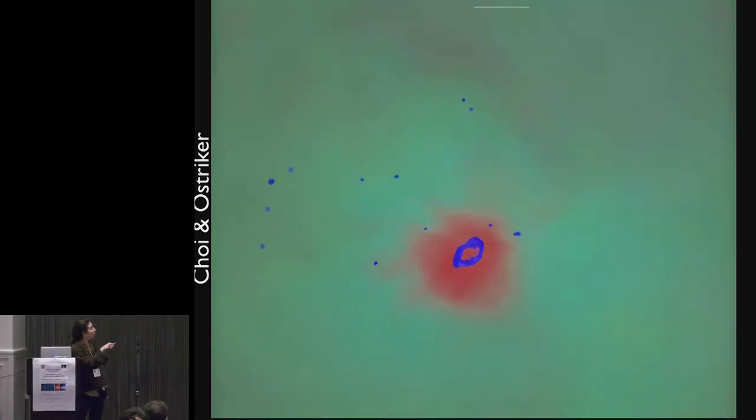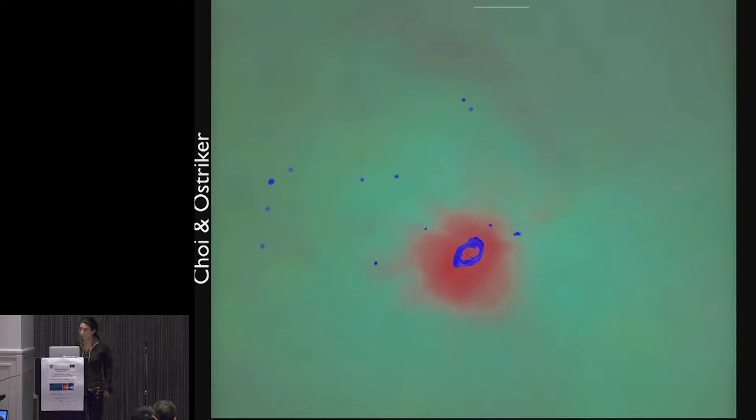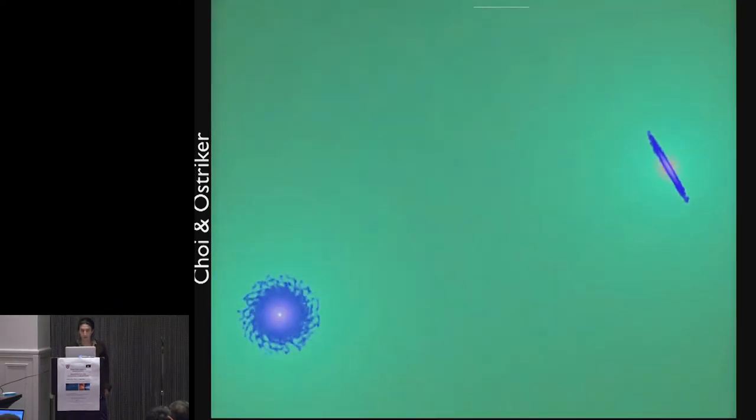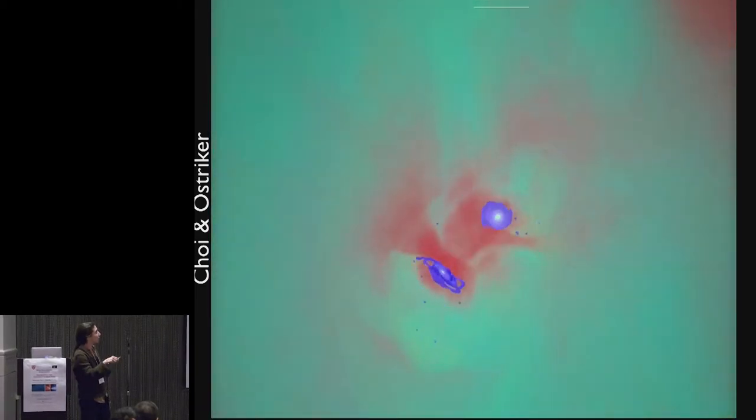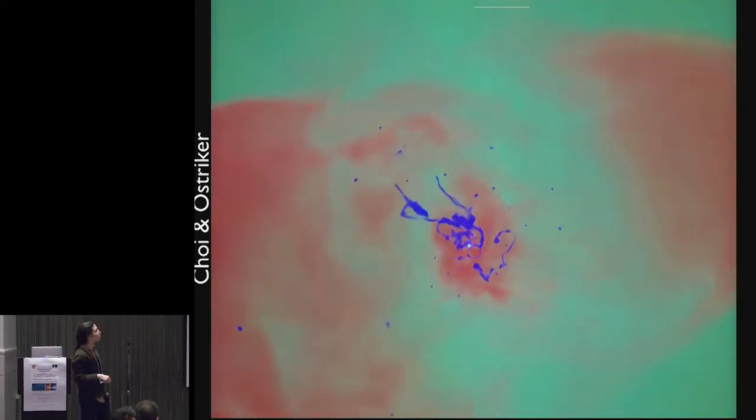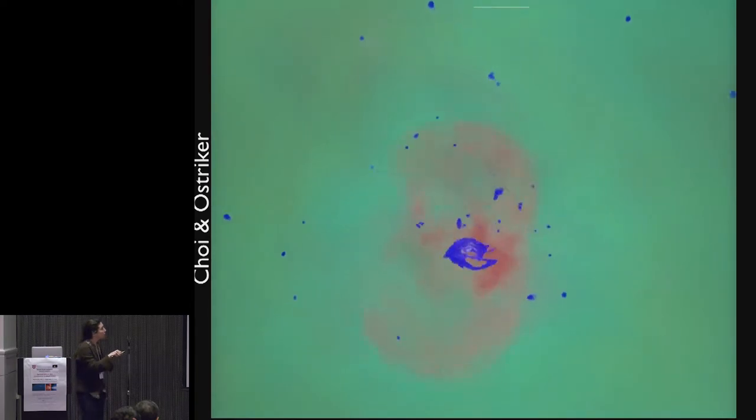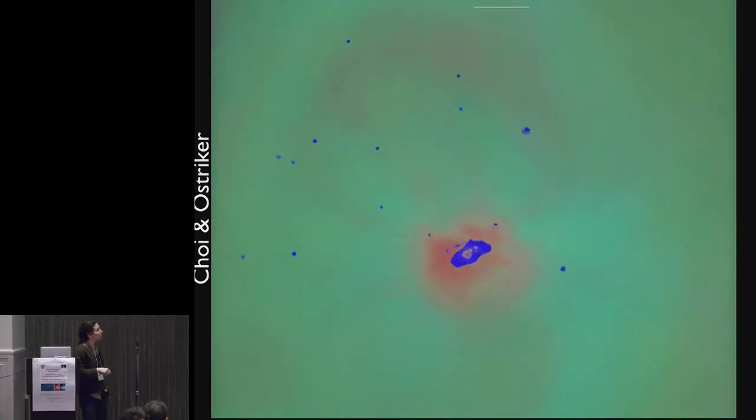The red is hot gas being expelled by black holes at the centers of these merging galaxies, done by Ina Choi, who was a graduate student at Princeton working with Jerry Oestreicher. So it's always nice to show these things again so you can see dramatic expulsions of hot gas as these two galaxies merge, leaving a remnant galaxy with very little gas.